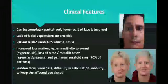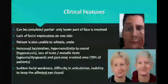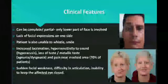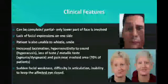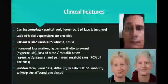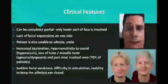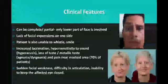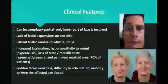Clinical features of Bell's palsy: it can be complete or partial paralysis. In partial paralysis, only the lower portion of the face is involved. There is lack of facial expression on one side. The patient is unable to whistle or smile. There is increased lacrimation, hypersensitivity to sound, loss of taste, and metallic taste. Pain in the mastoid region can be seen on the affected side, along with sudden facial weakness, difficulty in articulation, and inability to keep the affected eye closed.